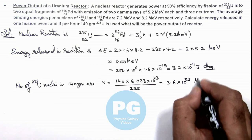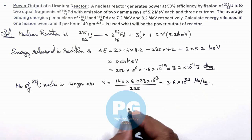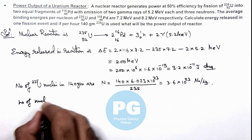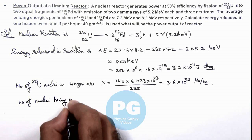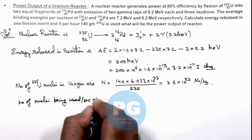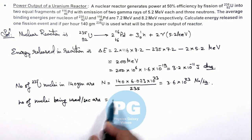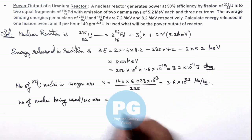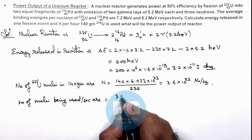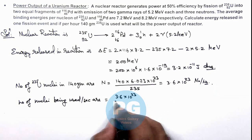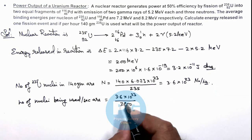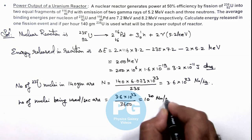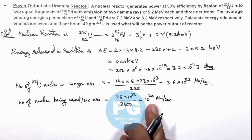So this many nuclei are being used per hour. Now in this situation, if we calculate the number of nuclei being used per second — I am calculating per second because I need to calculate the power output of the reactor in watts, that is the amount of energy released per second. So this will be 3.6 multiplied by 10 to the power 23 divided by 3600, the number of seconds in an hour, which equals 10 to the power 20 nuclei per second. That is the rate at which nuclei are being consumed in the reactor.